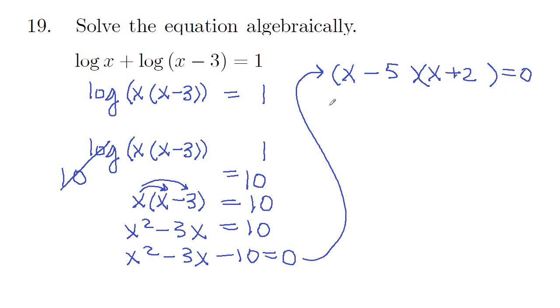So if a product is 0, one of the factors is 0. So x minus 5 is equal to 0, or x plus 2 is equal to 0.